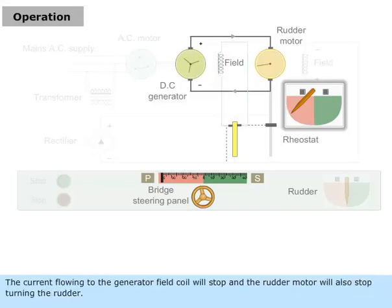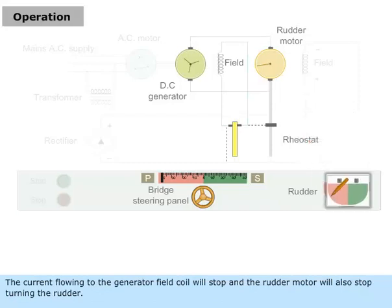The current flowing to the generator field coil will stop, and the rudder motor will also stop turning the rudder.